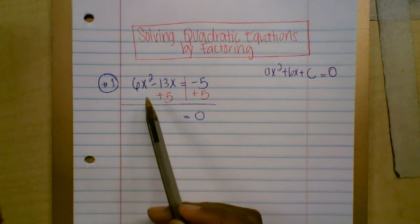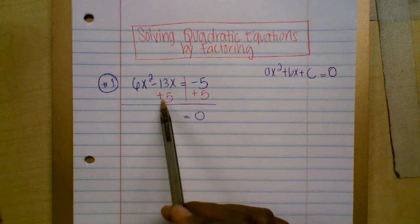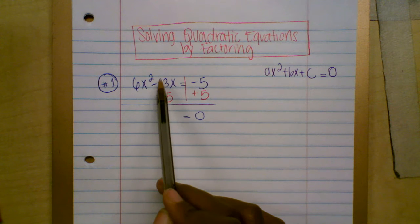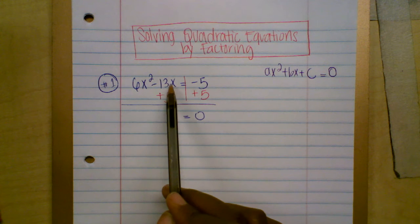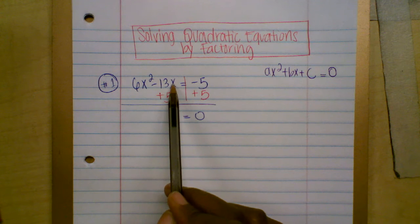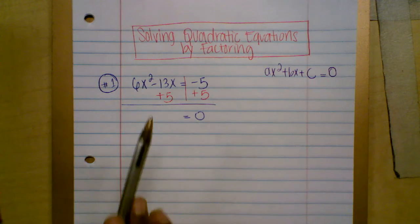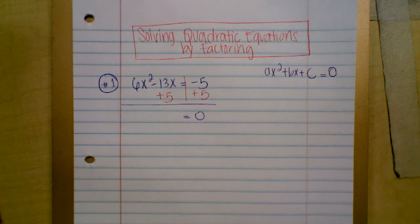Now look at the left side — alert! There's nothing to combine here. Five doesn't have an x, so we cannot combine negative 13x with positive five. You cannot combine terms that don't have the same variable. One has x squared, one has x, and one has no variable. When there are no like terms, you leave everything alone.